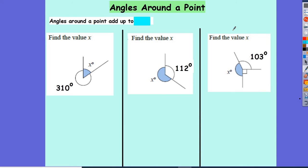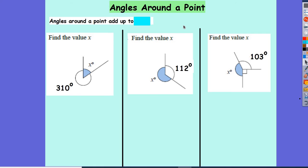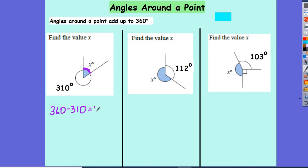Now we're going to look at working out missing angles around a point. If Owen did a full backflip, he turns through 360 degrees — so angles around a point add up to 360 degrees. For Question 1, to find angle x, I do 360 take away the given angle of 310, giving x equal to 50 degrees.